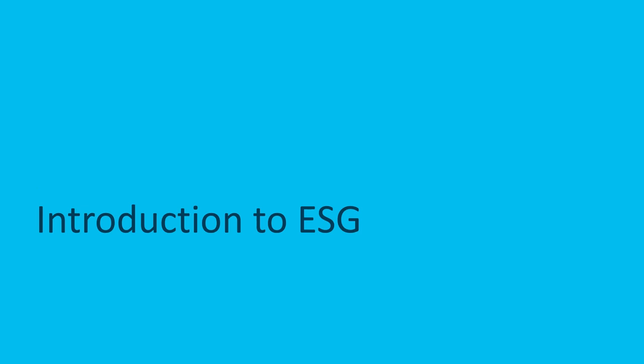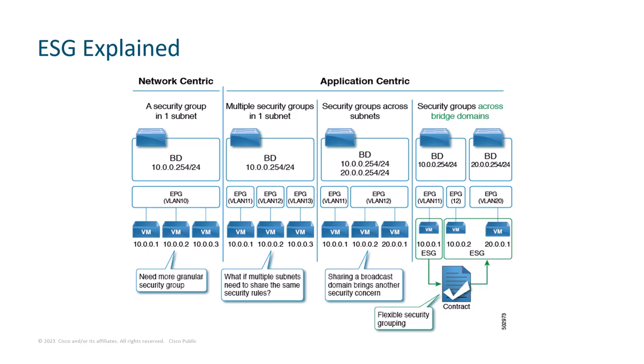Before moving to use case demos, let's first briefly discuss what Endpoint Security Group is. I think we all agree that the easiest way to manage endpoints with common security requirements is to put them into groups and control communication between them. But if you look at network-centric deployments today, some customers are using EPG to reflect old VLAN-based segmentation, so there are challenges if you need more granularity. You may need to achieve this granularity by segmenting the same bridge domain for different EPGs, so single BD across multiple EPGs.